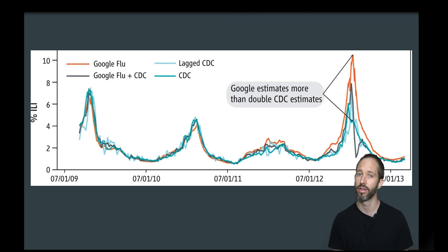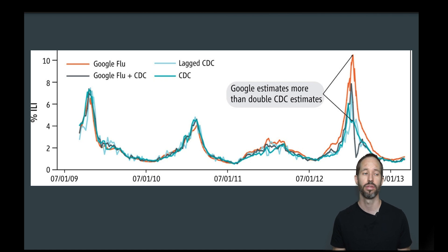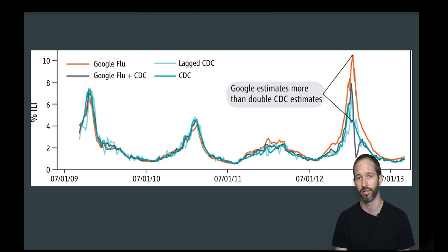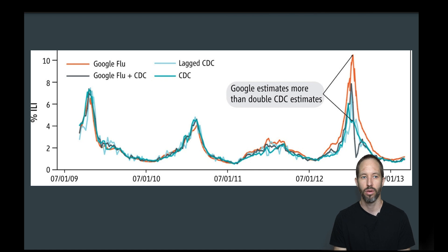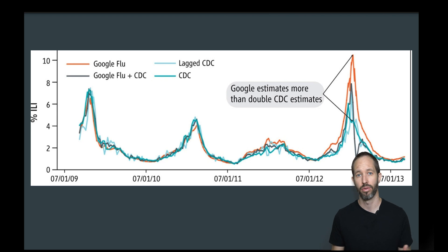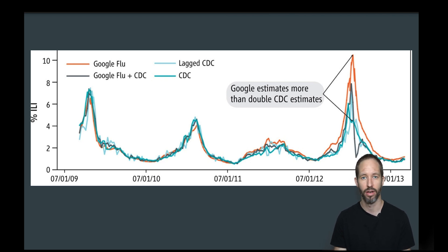This was really disappointing. The Google Flu tool was meant to be a wonderful example of the power of data science for social good, and it kind of fell flat. But we learned a lot from it — we learned about the dangers of algorithmic confounding. Now we know a lot about who uses social media, what types of digital trace data are out there, and we have new, better data.